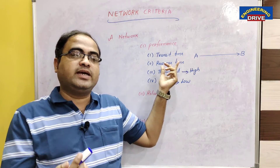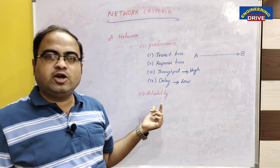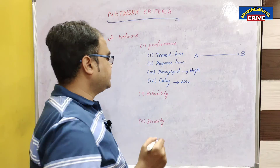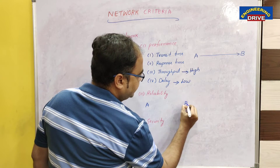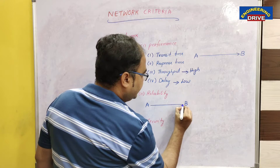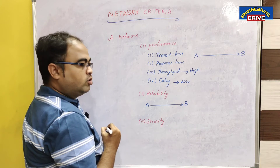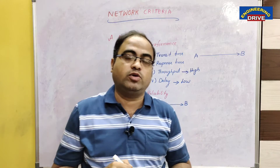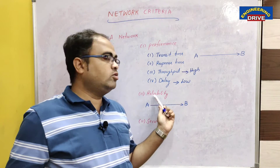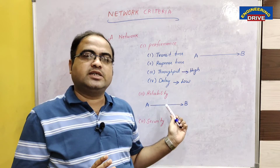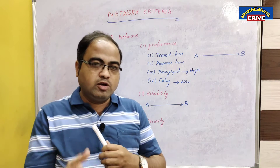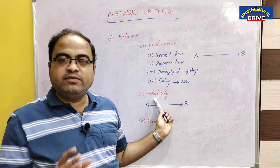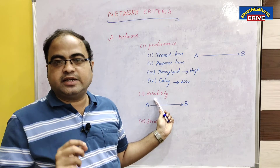The next criteria on which we can judge our network is reliability. Reliability means we need to be able to depend on this network. From device A, the data transmitted should easily reach device B without any failure. In case of any failure, the network should be able to overcome, rectify, and recover from that failure. A network's reliability means it should have less number of failures, and in case of failure it should be able to recover in a less amount of time.